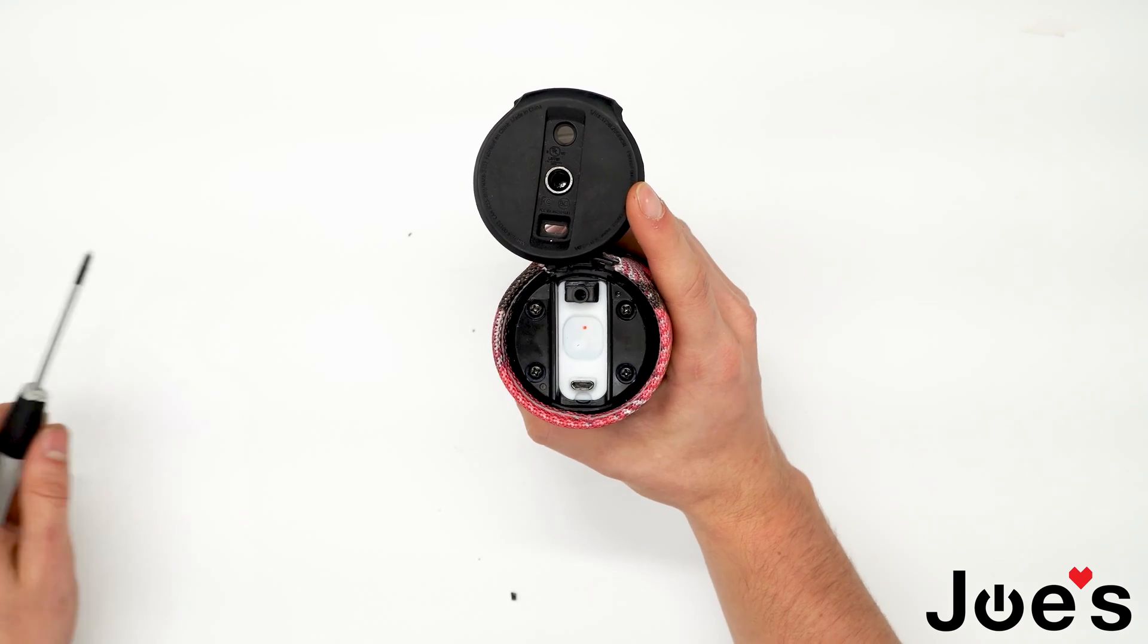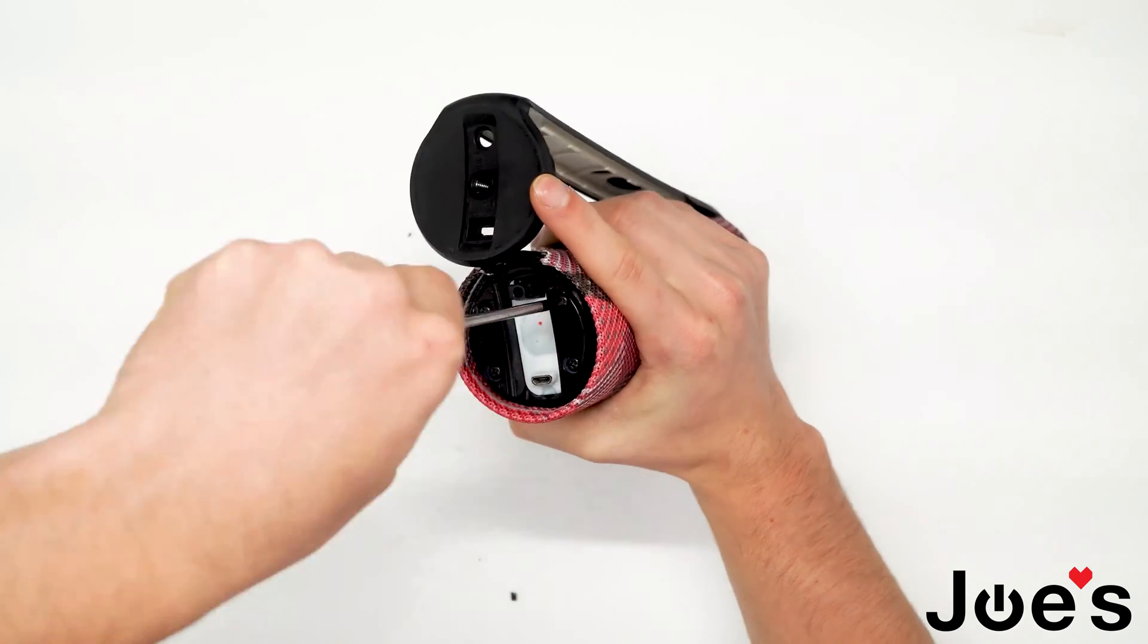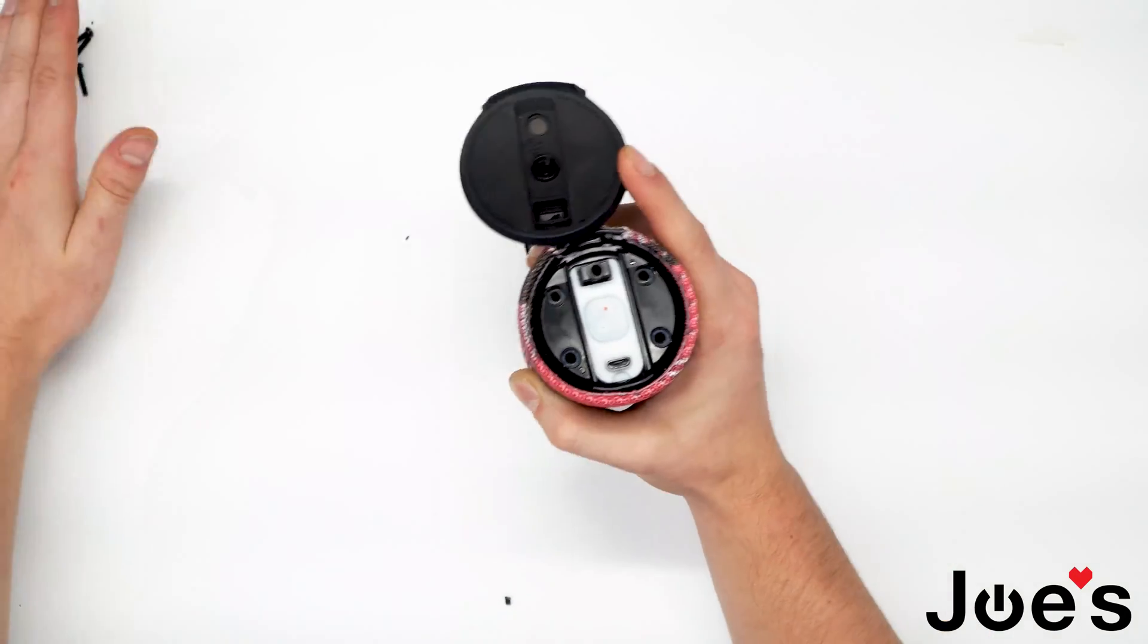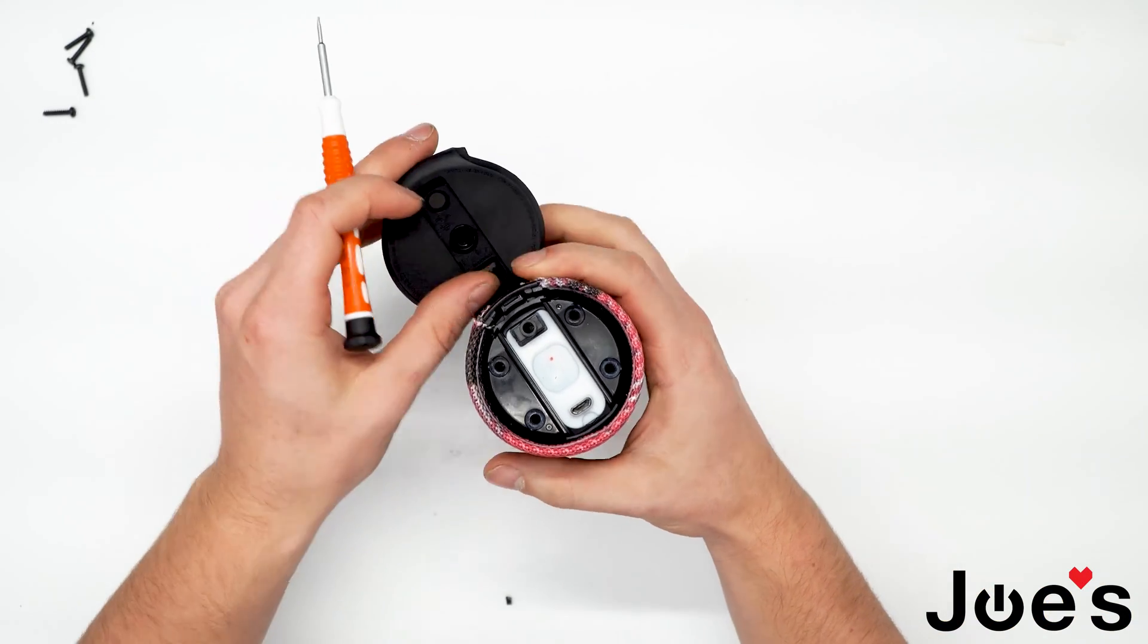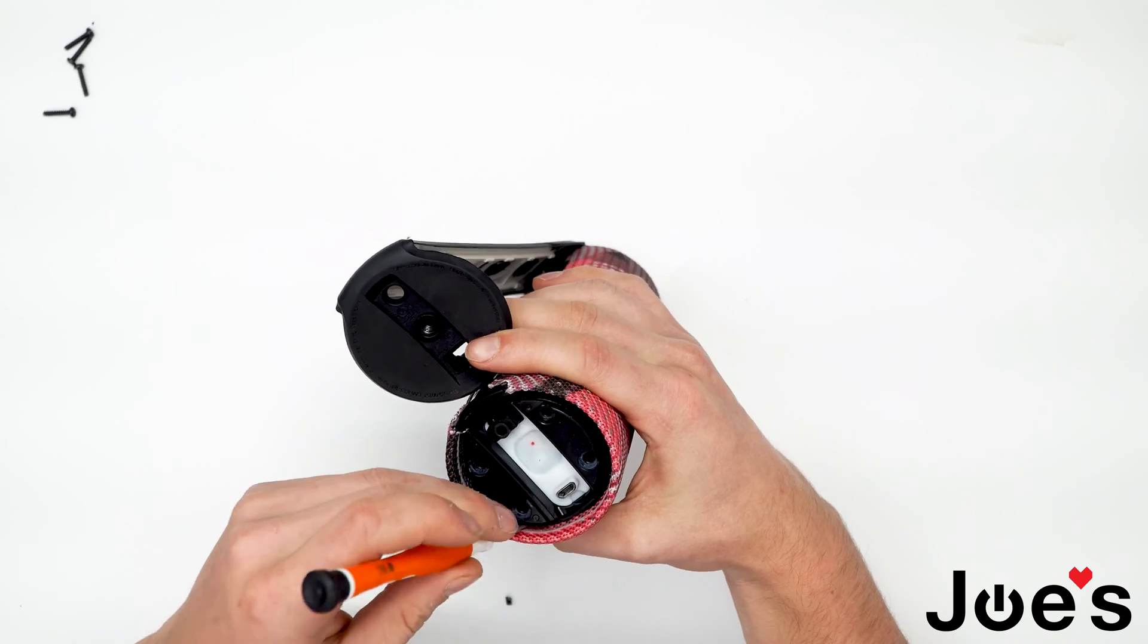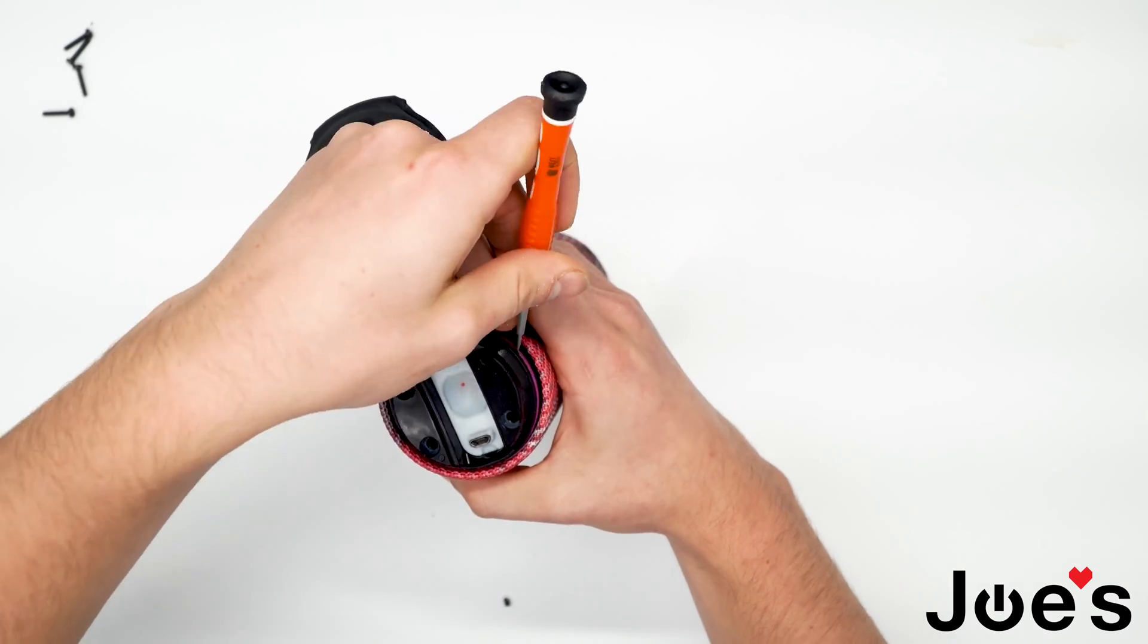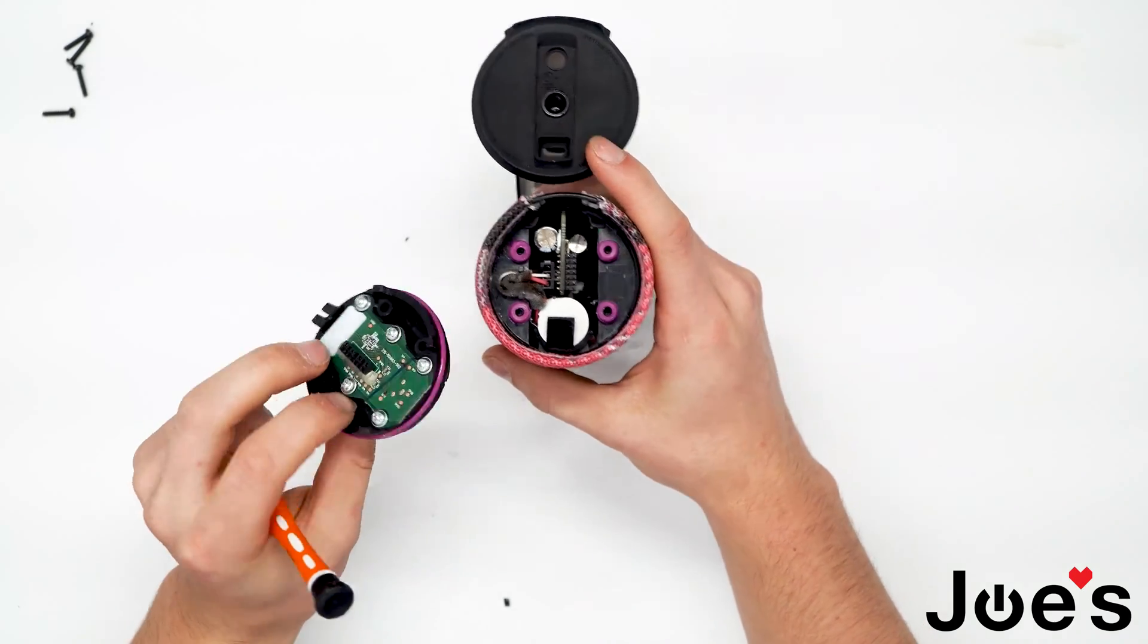Let's go ahead and free up these four Phillips screws. Now that the screws are out, get yourself a flathead or something thin. So use this flathead to go around and pry out this part, which is the port.